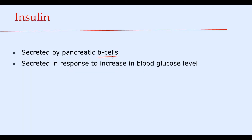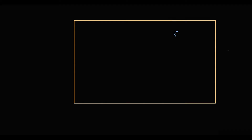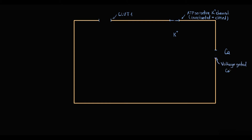Insulin is secreted by pancreatic beta cells in response to increasing blood glucose level. To explain the mechanism of insulin secretion, we need to know a few basic concepts. Potassium is intracellular, meaning its concentration inside the cell is much higher than outside. Calcium is extracellular, so calcium concentration outside the cell is much higher than inside. Beta cells have in their membranes GLUT2 transporters, ATP-sensitive potassium channels, voltage-gated calcium channels, and vesicles containing already-formed insulin and C-peptide.